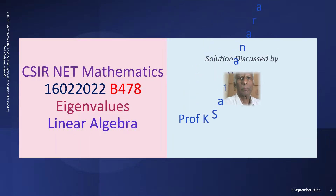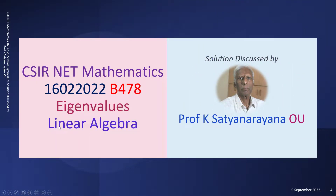We now discuss the solution of a problem from the section Linear Algebra. The problem is based on eigenvalues, diagonalization, and dimensions of eigenspaces. This question appeared in the CSIR National Eligibility Test held on 16th February 2022, from section B.